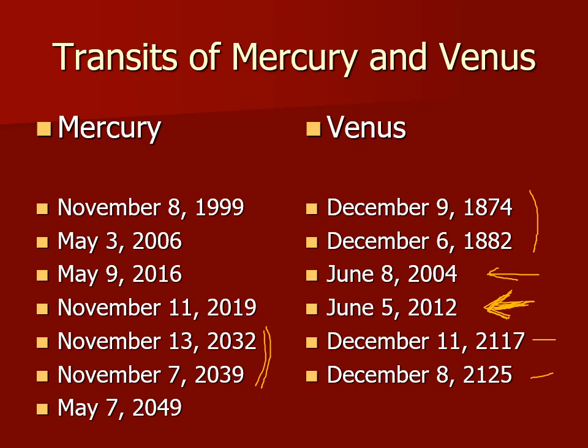Transits are something unique to inferior planets — only an inferior planet can transit, and superior planets cannot transit. But inferior planets cannot ever be at opposition. So if something is in opposition, by default it's a superior planet, asteroid, or comet. If it transits, by default it's going to be an inferior object. We'll fine-tune these ideas later, but this gives you an idea about transits and how they relate to superior and inferior planets.